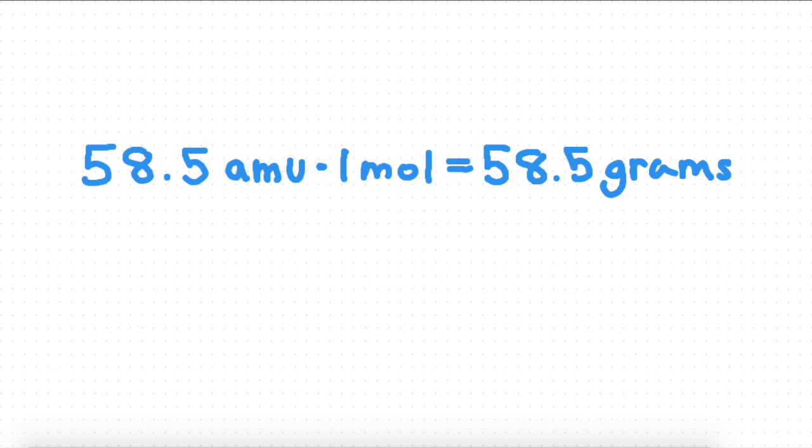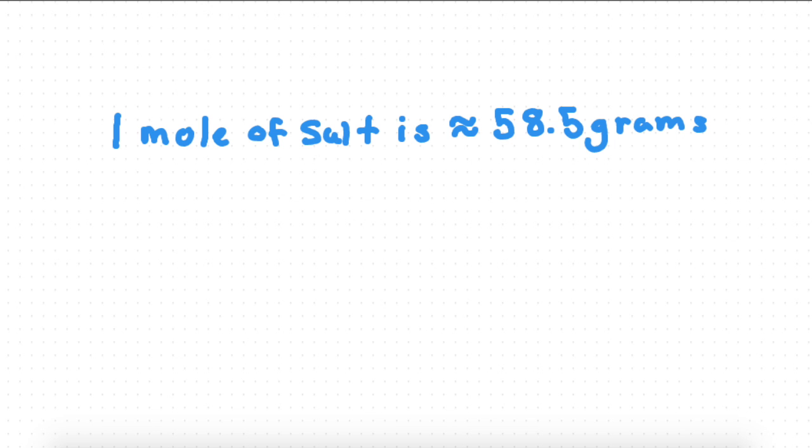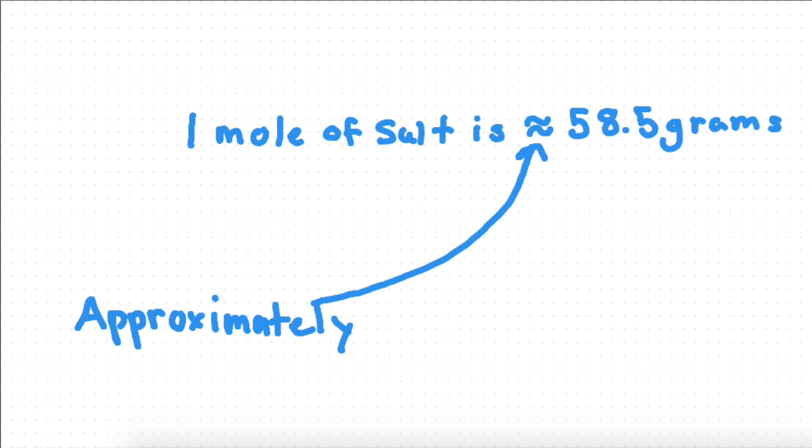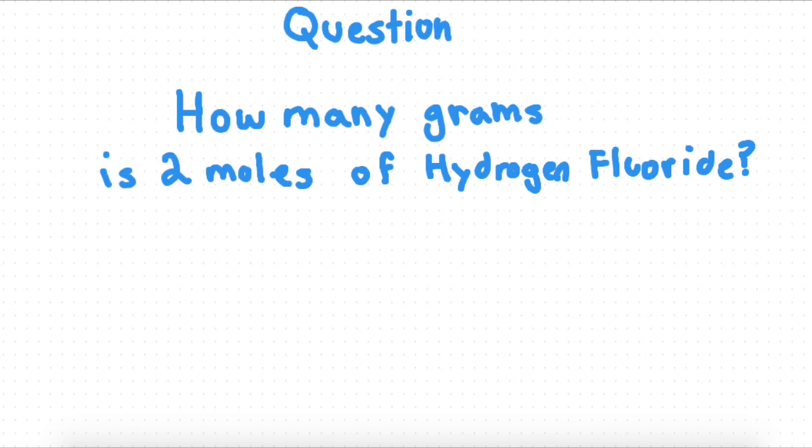So one mole of salt is 58.5 grams. By the way, that squiggly equal sign just means approximately, which means it's not exactly 58.5 grams, but almost that.